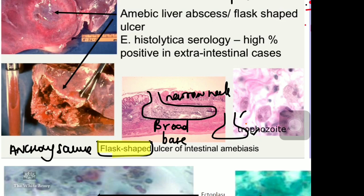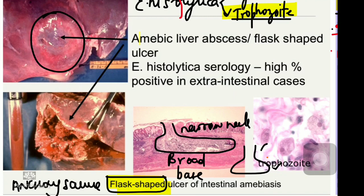Coming to extra-intestinal manifestations, one important complication is the amoebic liver abscess. If we take pus from the amoebic liver abscess, it has the classic appearance called 'anchovy sauce' appearance.